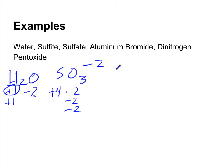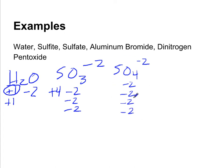Let's look at sulfate, which is SO₄ with a negative two charge. We have four oxygens for a total negative oxidation state of negative eight. That means sulfur in sulfate has an oxidation state of plus six, since positive six added to negative eight equals negative two.